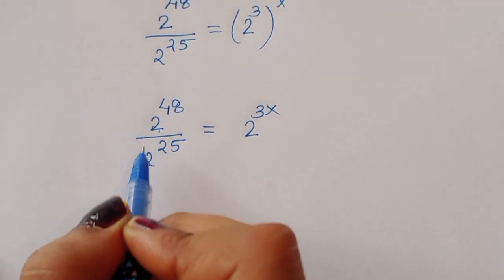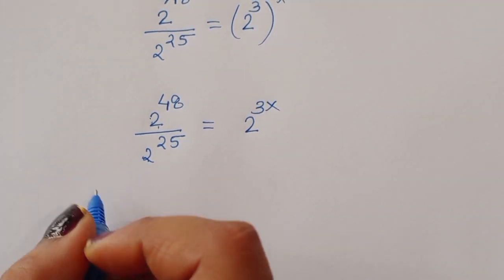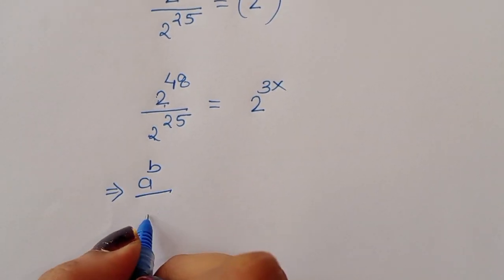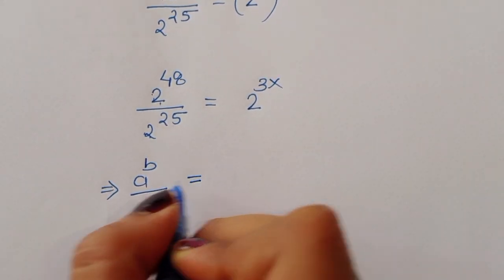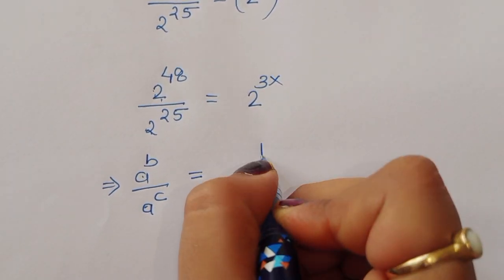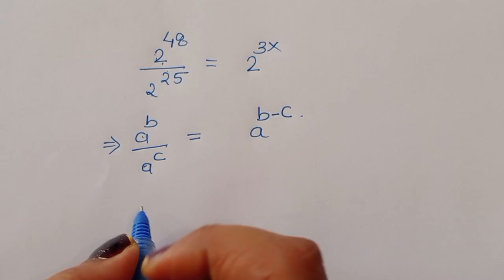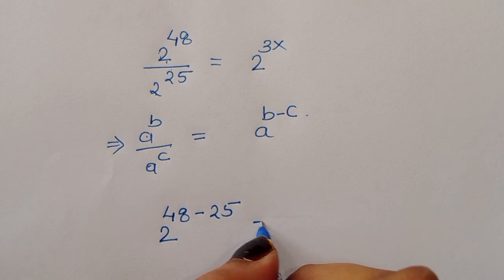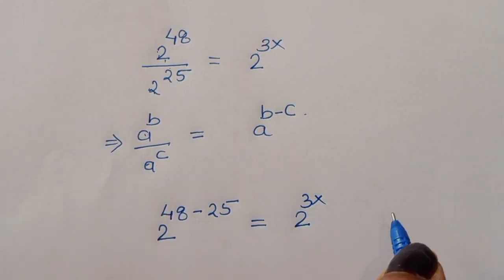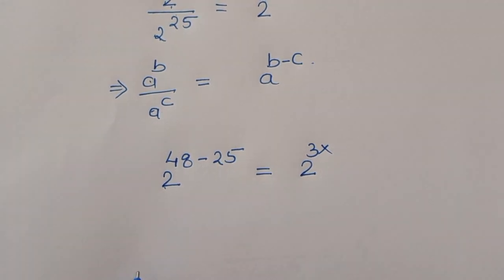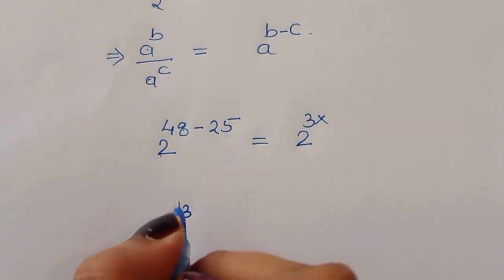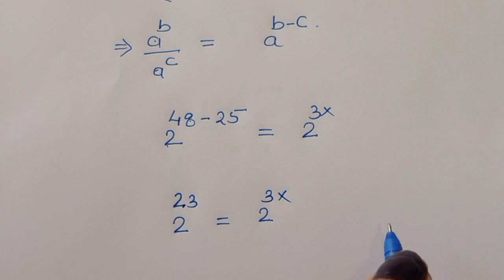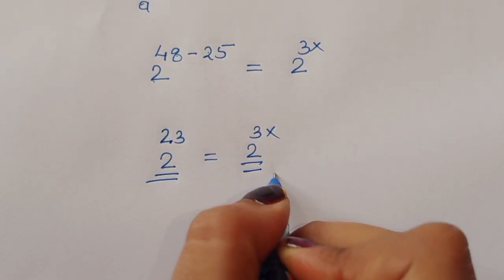Since the base is the same on both sides, we use the formula: a power b divided by a power c equals a power b minus c. Applying this, 2 power 48 minus 25 equals 2 power 3x. Now 48 minus 25 is 23, so 2 power 23 is equal to 2 power 3x.